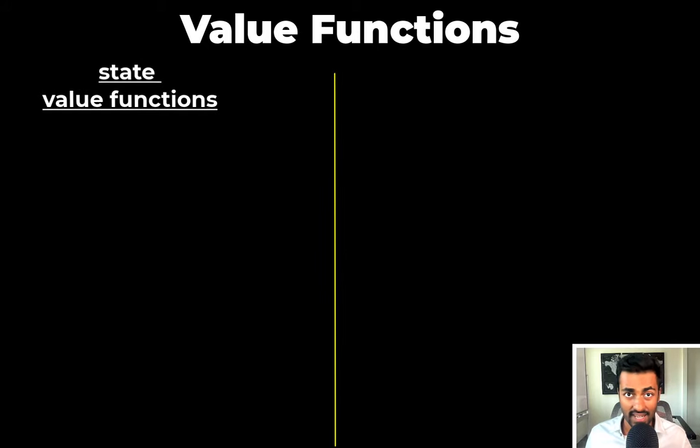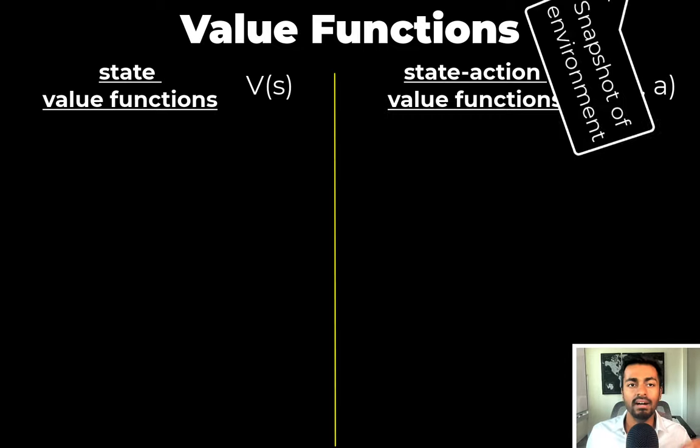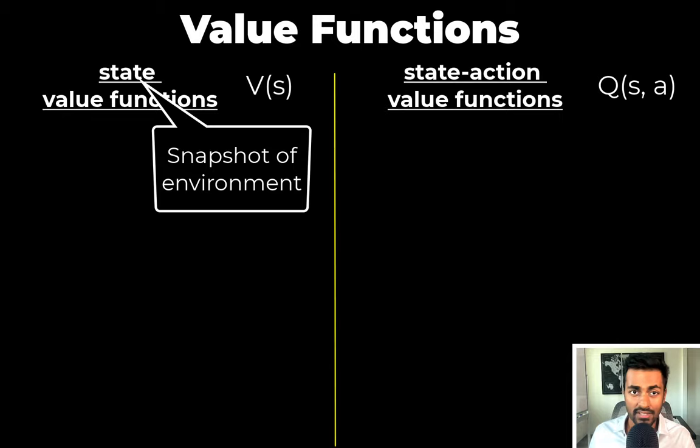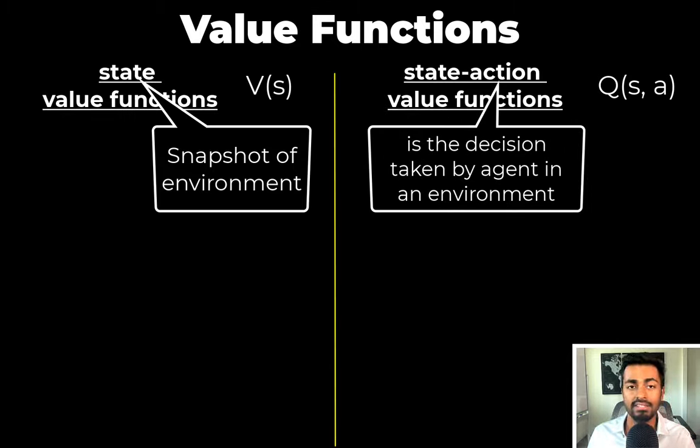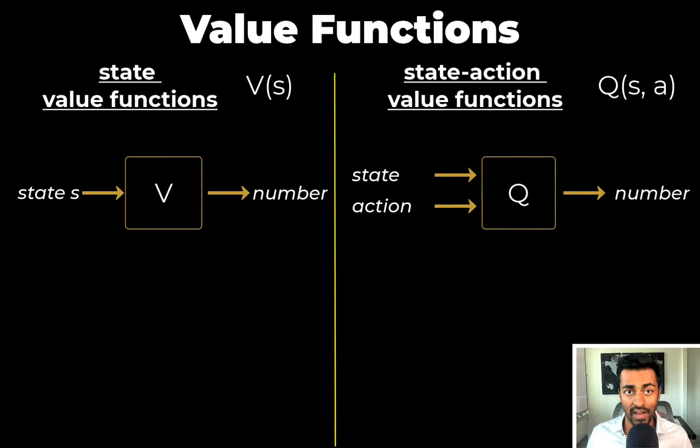One of them is the state value function, represented by V, and then we have the state-action value function, represented by Q. Wait, what are states and actions? A state is the snapshot of an environment that the agent is in, and an action is the decision taken by the agent in the environment. The state value function will take the state as input and output a real number. The state-action value function will take the state and current action as an input and then output a real number. This real number is known as a Q value.